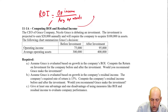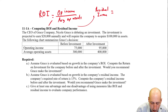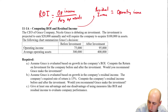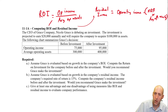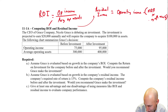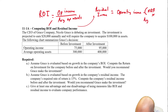In a few moments, we'll compute residual income. That is: operating income minus, in brackets, required rate of return (RRR) times average operating assets. So it's required rate of return times average operating assets.